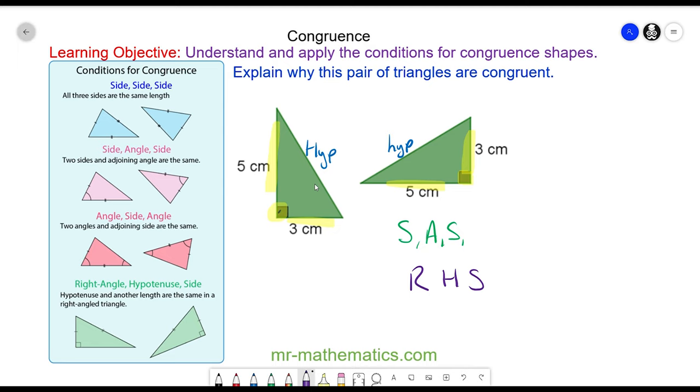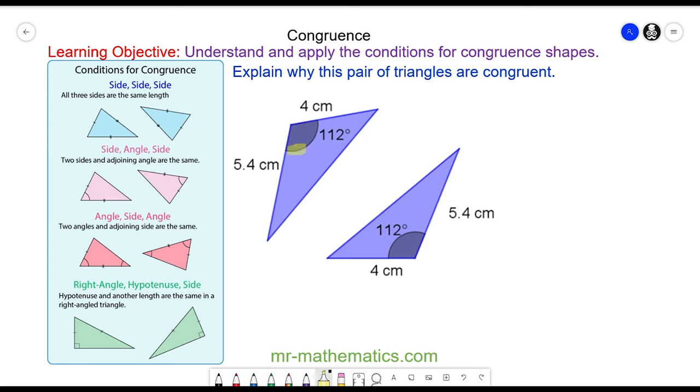We'll try one more. So here you've got an angle between two equal lengths of four and five point four, four and five point four. So again, the proof here is side, angle, side, which proves these two triangles are congruent.